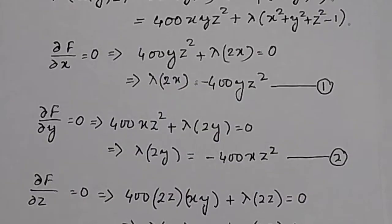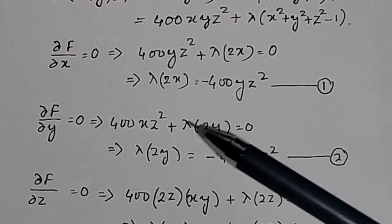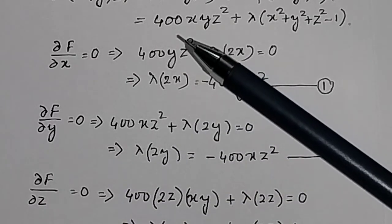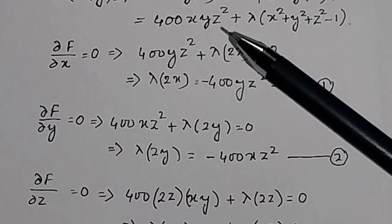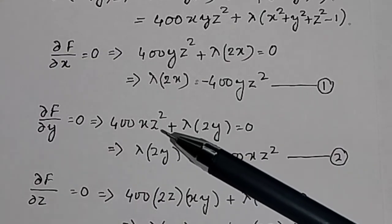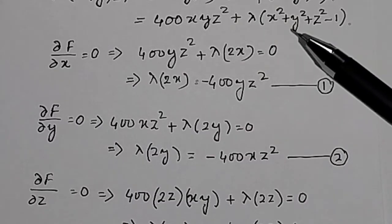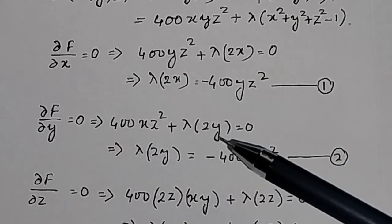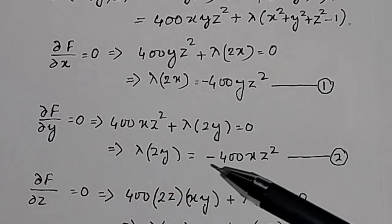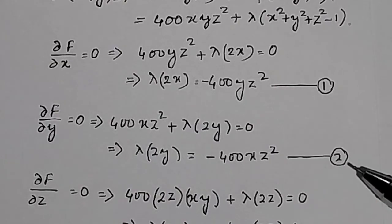Similarly, taking the partial derivative of f with respect to y and setting it to 0: the partial derivative of 400xyz² with respect to y is 400xz², and the constraint term gives λ·2y, so: λ·2y = −400xz². Call this Equation 2.